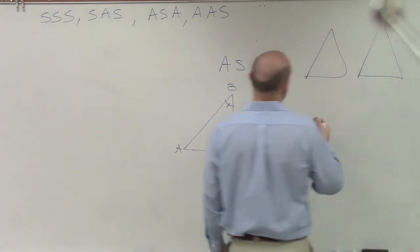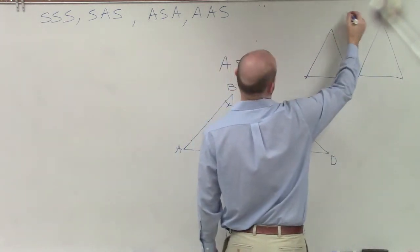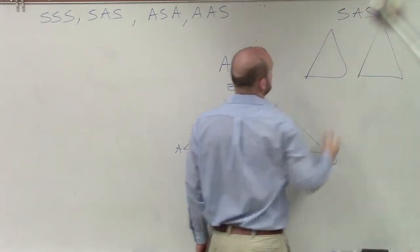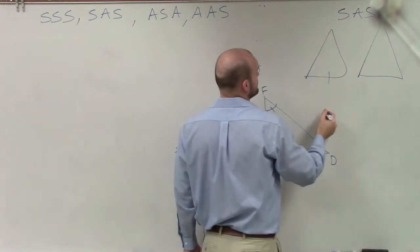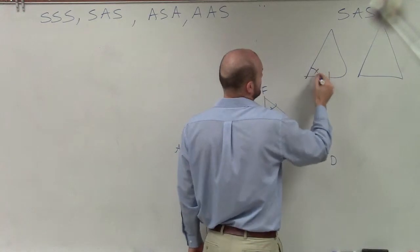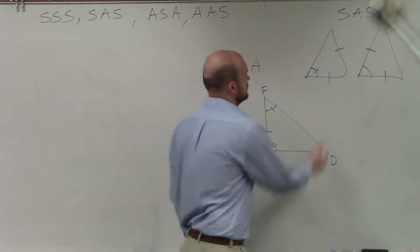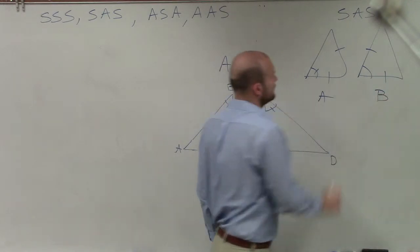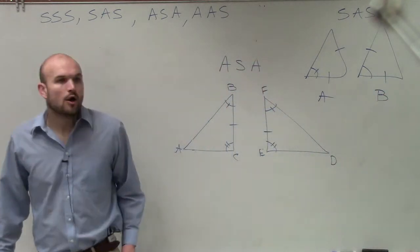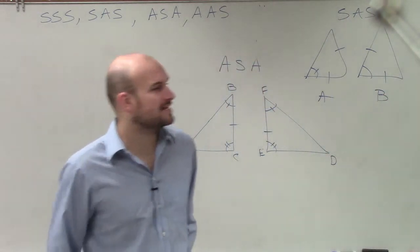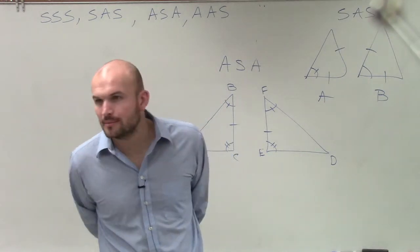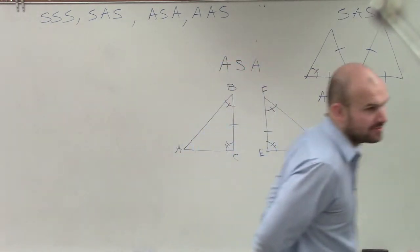Guys, if I gave you, let's talk about side-angle-side. All right? You guys have two different triangles. Which one of those triangles has an included angle? Let's pick on Mario. Which one do you think it would be? A or B?